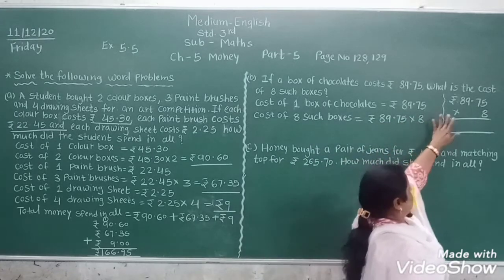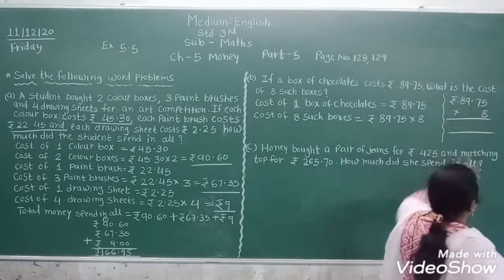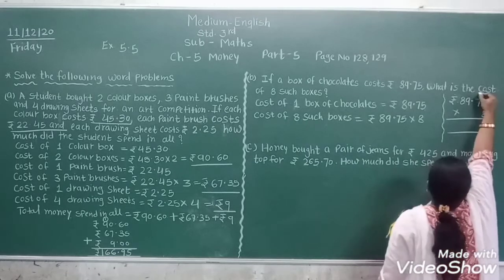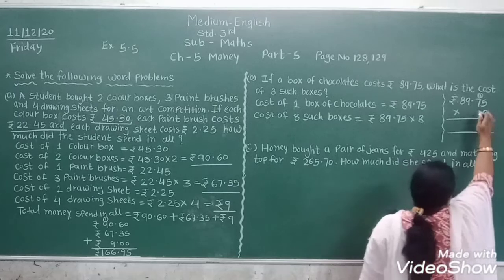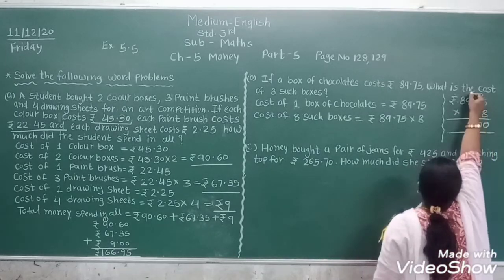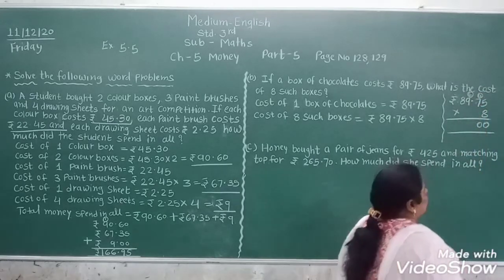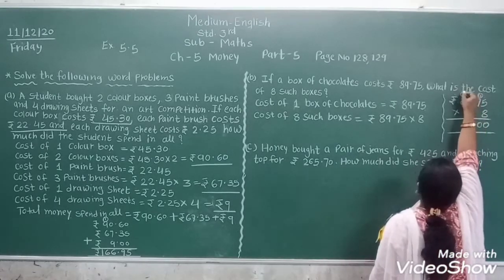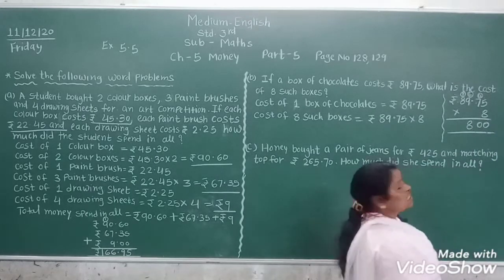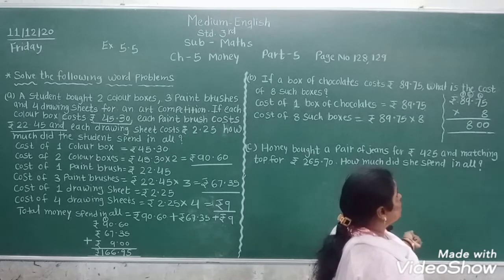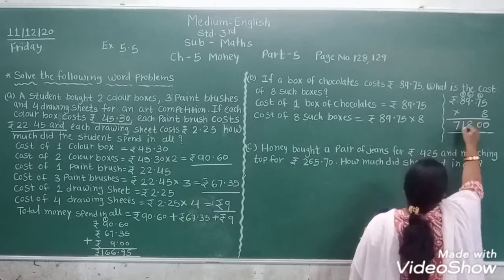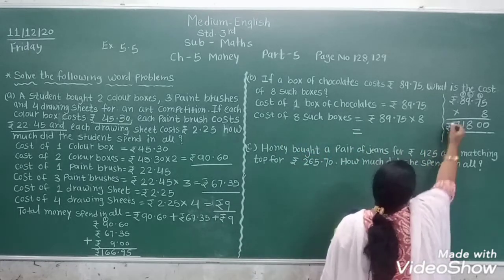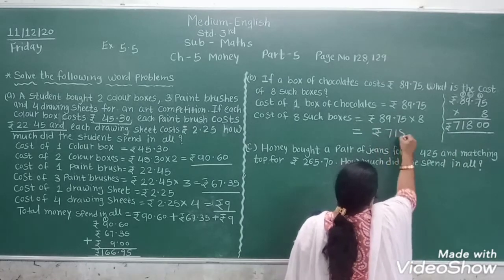We multiply Rs. 89.75 by 8. 8 fives are 40 — write 0, carry 4. 8 sevens are 56 and 4 is 60 — write 0, carry 6. 8 nines are 72 and 6 is 78 — write 8, carry 7. 8 eights are 64 and 7 is 71 — write 1, carry 7. So cost of 8 such boxes is Rs. 718.